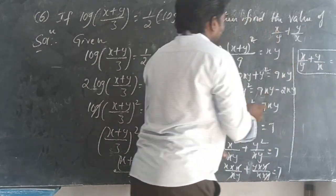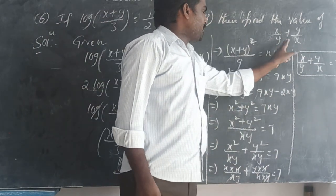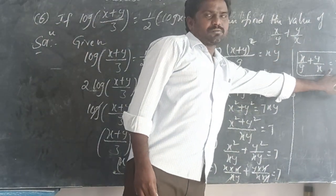Therefore, the value of x/y plus y/x is equal to 7.